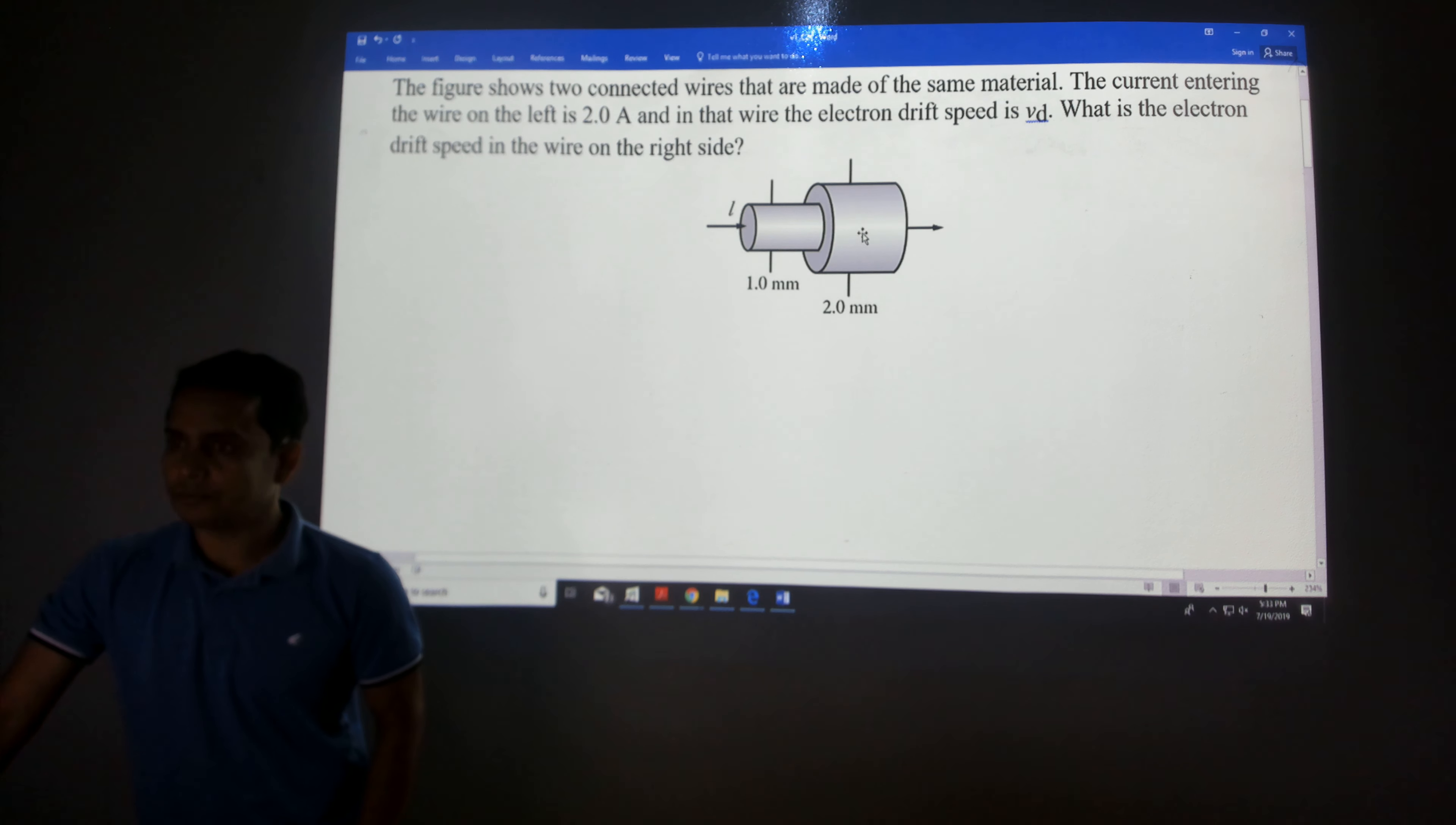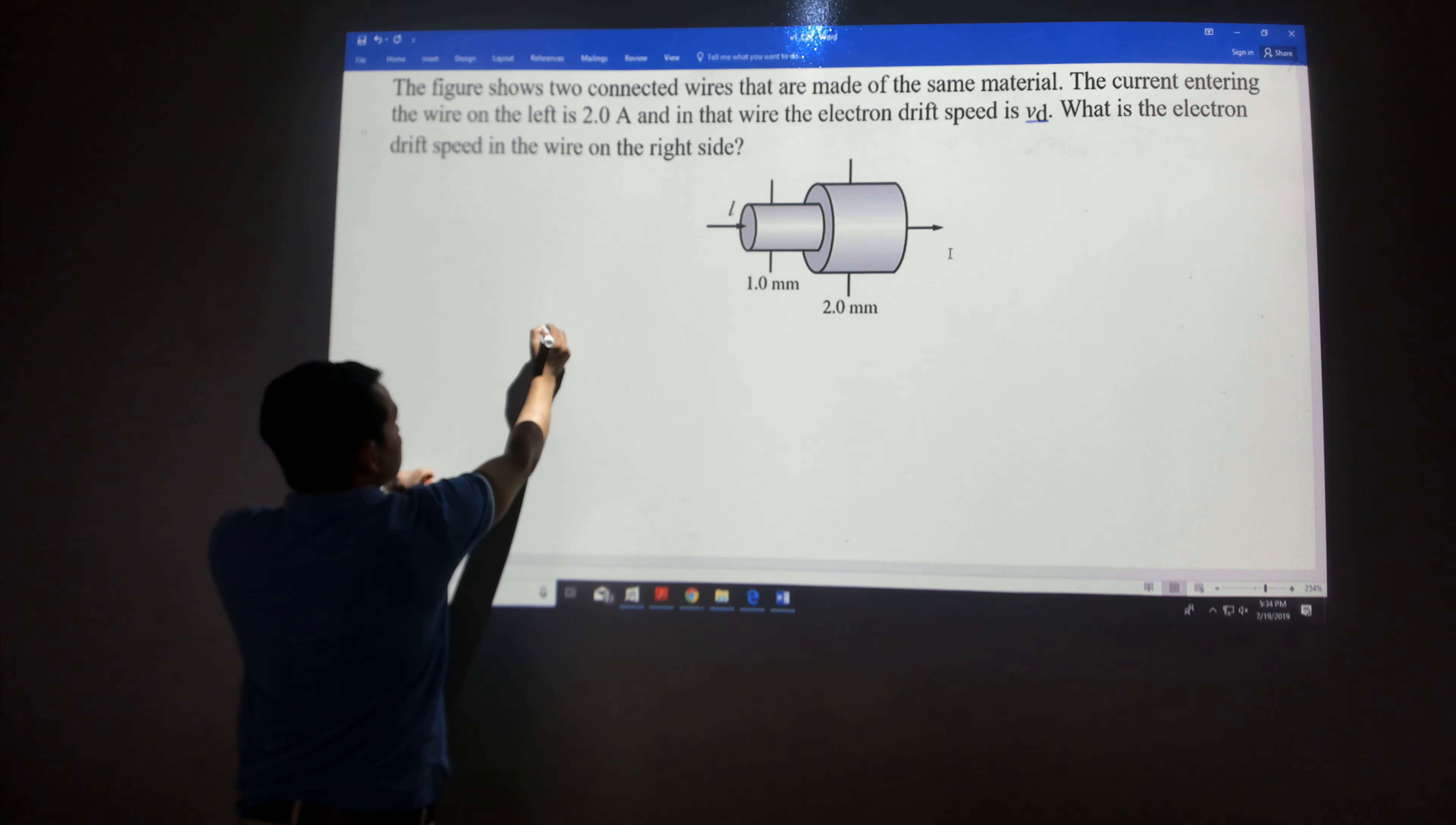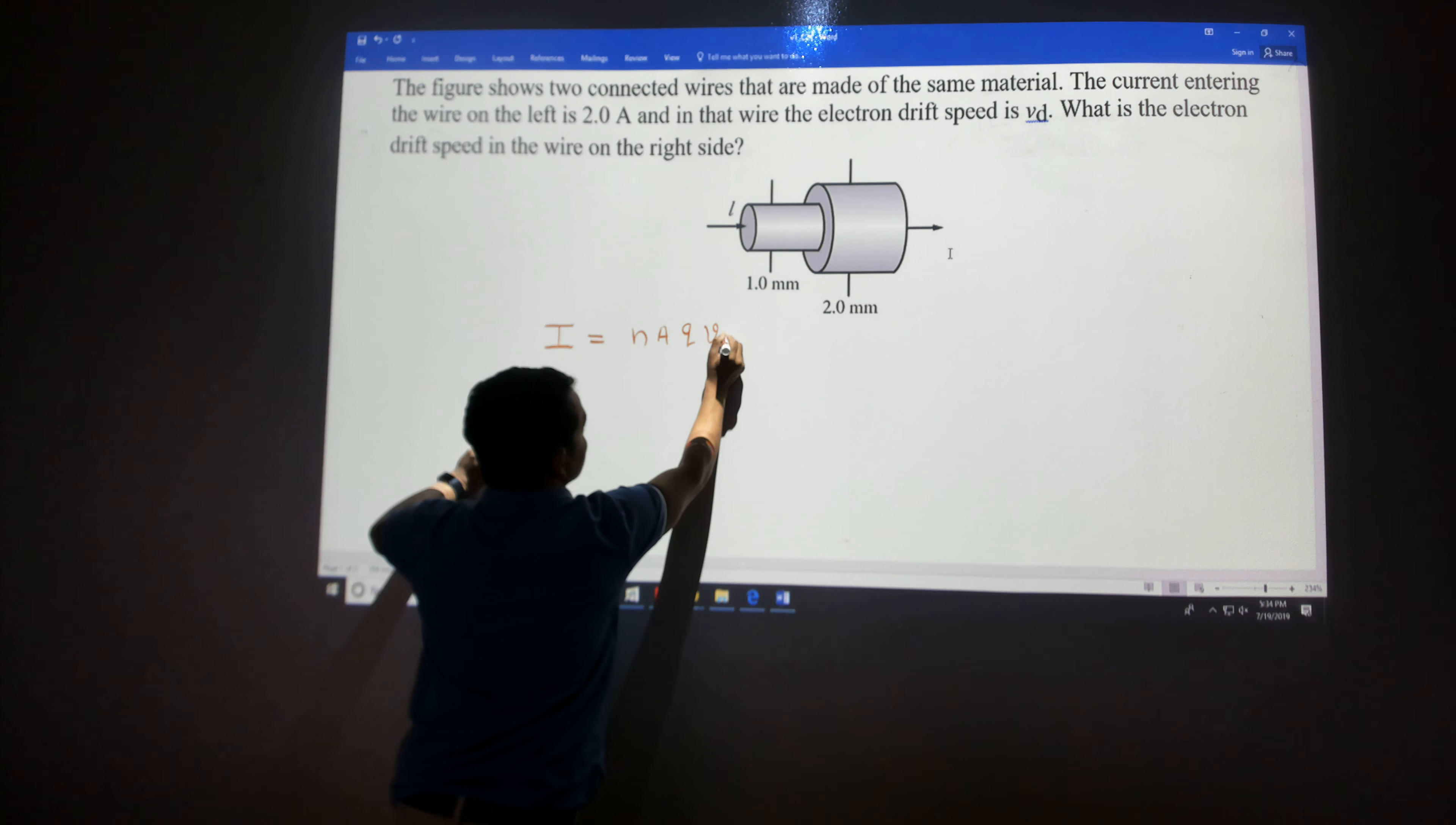You have to find out what is the drift velocity of the electron in this wire. The relationship between current and drift velocity is given by I = NAQVD.